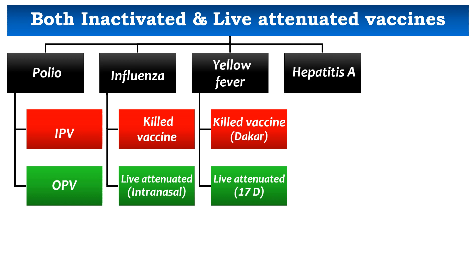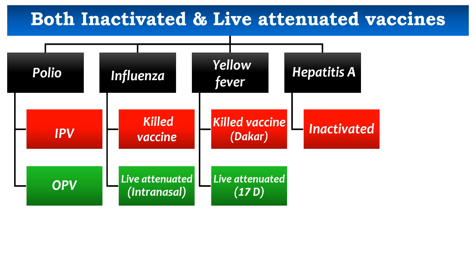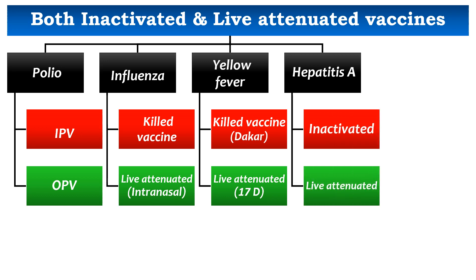For Hepatitis A, we have both an inactivated vaccine and a live attenuated vaccine. The inactivated vaccine is prepared from human fetal lung fibroblast cell lines, and the live attenuated vaccine is prepared from human diploid cell lines.